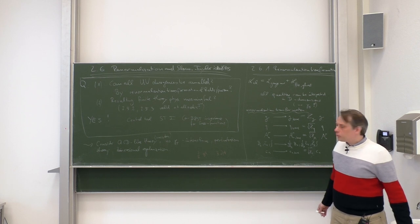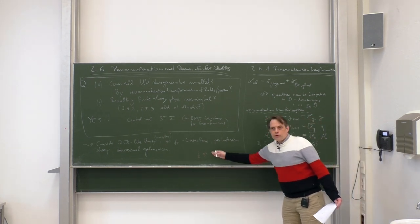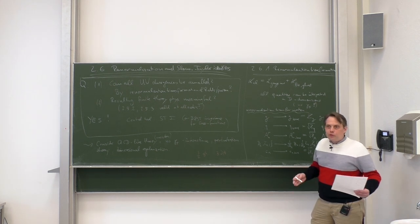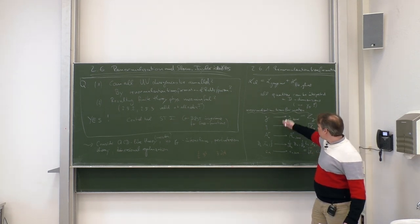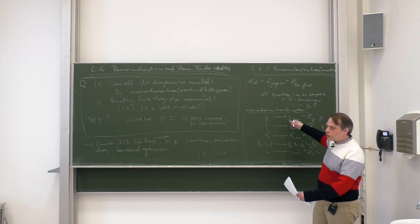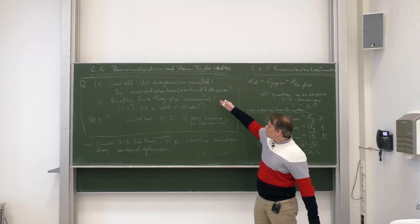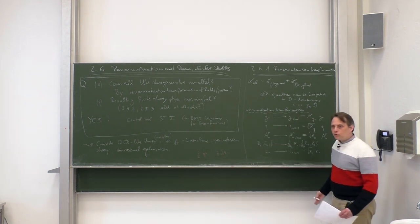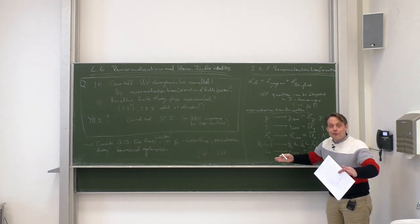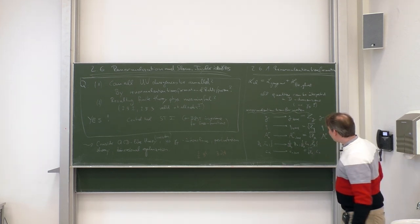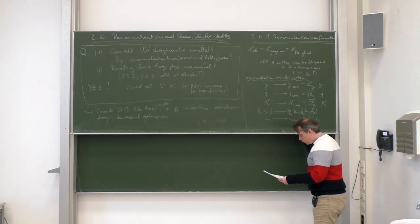The counterterm Feynman rule for two gluons A_{A,μ} and A_{B,ν} is denoted with a cross. Going to momentum space, derivatives become −ip, so the Feynman rule is: i · δZ_A · (−p²g_{μν} + p_μp_ν) · δ_{AB}. This is the counterterm Feynman rule coming from the renormalization transformation.